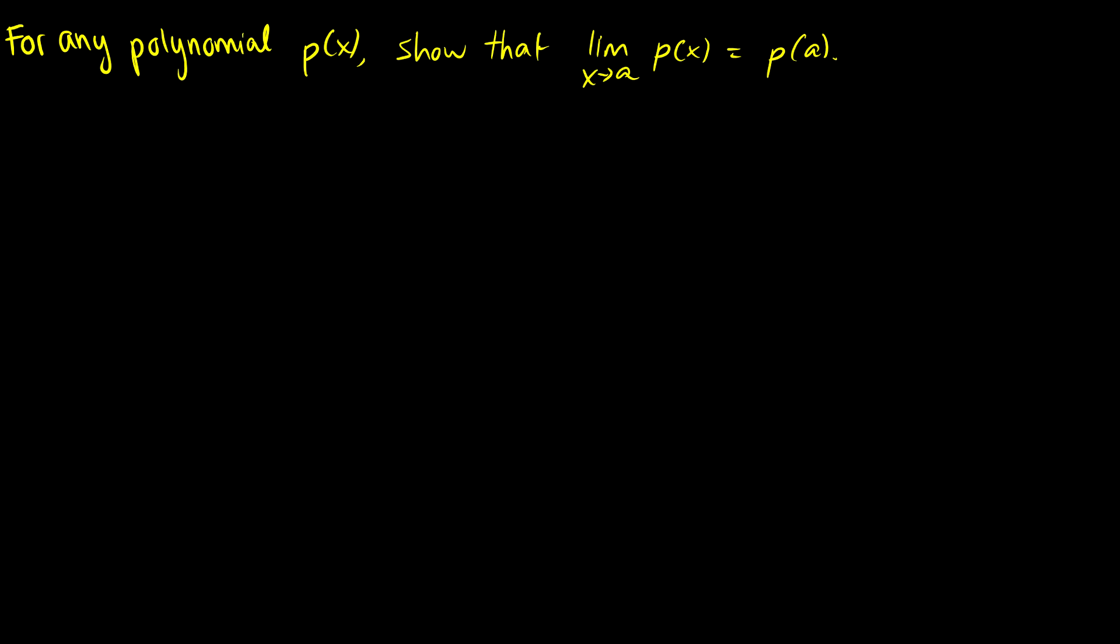We just want to show that for any polynomial p(x) we want to show the limit as x approaches a of p(x) is equal to p(a). How do we write a polynomial? Well a polynomial p(x) takes the form of some constant a₀ + a₁x + a₂x² on and on until we get to the nth term or the last term aₙ times x to the n.